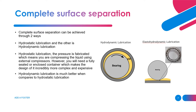Complete surface separation can be achieved through two different ways: hydrostatic lubrication and hydrodynamic lubrication. For hydrostatic lubrication, the pressure is fabricated, meaning you compress the liquid using an external compressor. However, you need a fully sealed or enclosed container, which makes the design incredibly more complex and expensive. For these reasons, hydrodynamic lubrication is the better method compared to hydrostatic, which is why we'll be focusing on hydrodynamic lubrication.